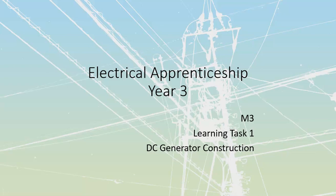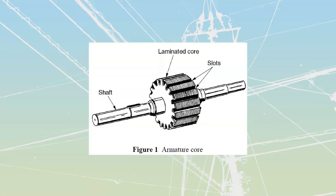All right, level three. We're going to take a look at DC construction of machines, particularly we're going to start with the DC generators, although motors we're going to find out are built almost the exact same way. We're going to start with taking a look at the insides of these things, then we're going to transfer that to the outsides, starting from the central core and working our way through.